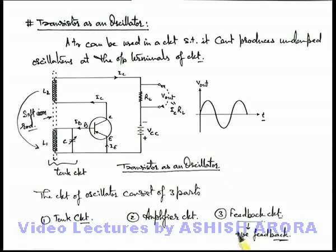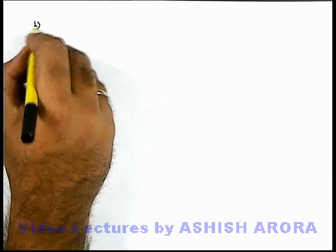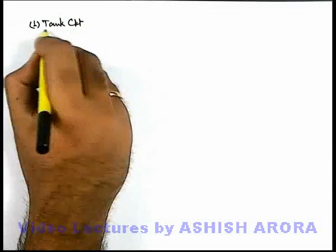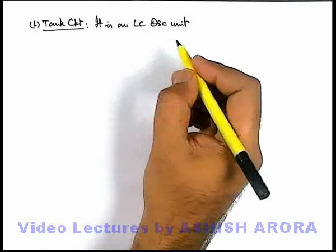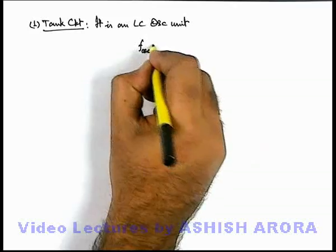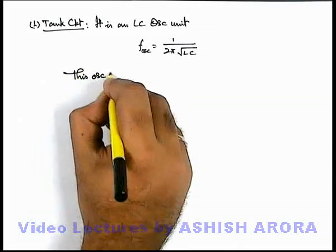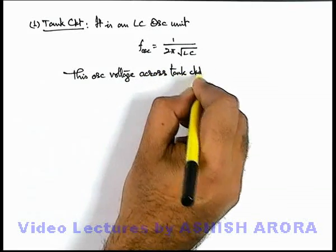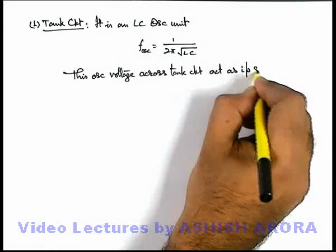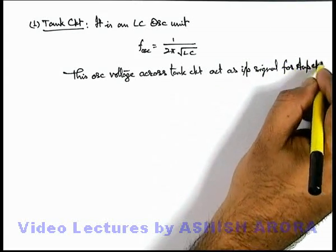Let's discuss the three parts of an oscillator circuit in detail. The first one is the tank circuit, which is an LC oscillating unit. The frequency of such oscillations is given by f = 1 / (2π√LC). This oscillating voltage across the tank circuit acts as the input signal for the amplifier circuit, which then amplifies it.